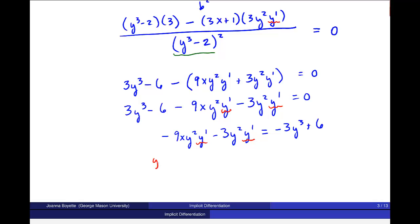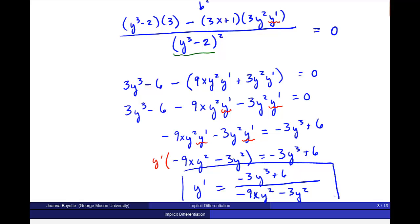Now I go ahead and factor out this y prime. Okay? And what's left over is 9xy squared minus 3y squared is equal to negative 3y cubed plus 6. And divide both sides by this term on the right. So I get negative 3y cubed plus 6 all over negative 9xy squared minus 3y squared. Okay?